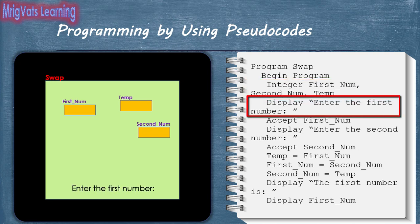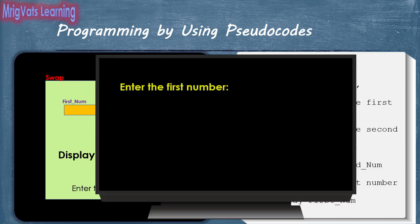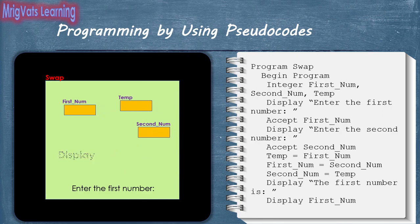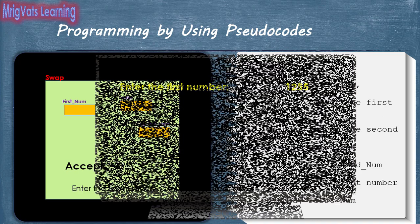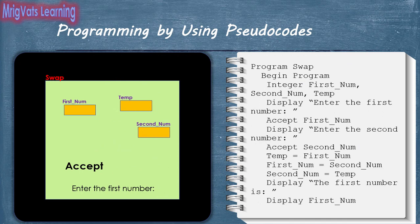As soon as the display statement is run, the program writes the 'Enter the first number' text in memory, which is taken as input by the display statement and displayed on the virtual display board. The memory associated with the display statement is then released for other statements of the program. When the accept statement is run, it waits for the user to input the number. As soon as the user enters a value, for example 1255, the accept statement stores the value in the firstnum variable in the memory block. The memory associated with the accept statement is then released.